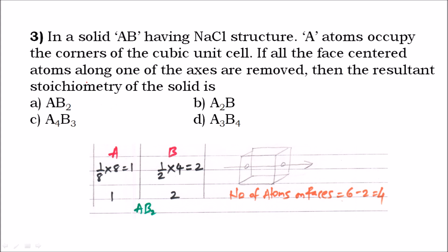Third question: in a solid AB having an NaCl structure — which is a face-centered cubic (FCC) lattice — A atoms occupy the corners of the cubic unit cell. Applying the same logic, one-eighth into eight gives A equals one.